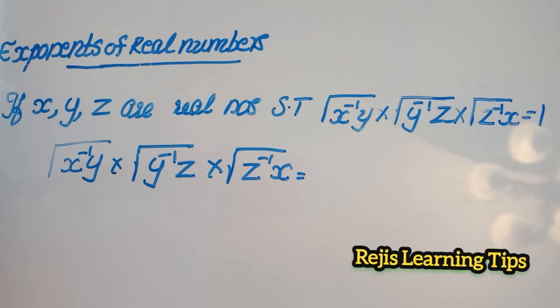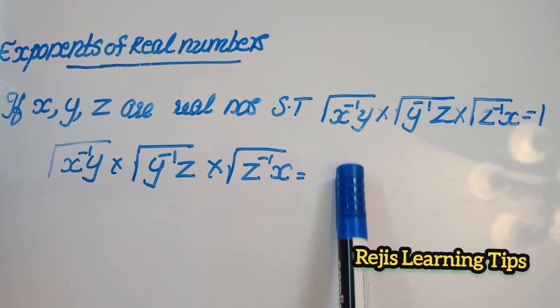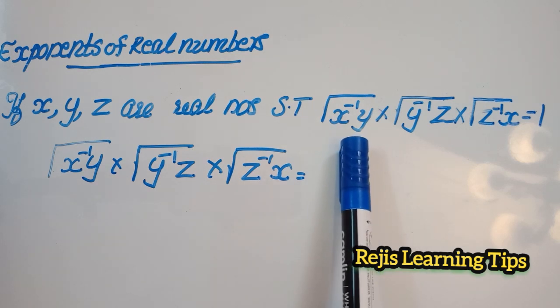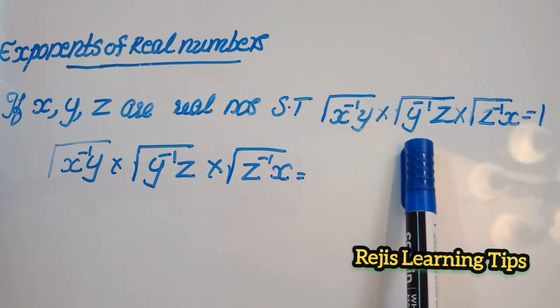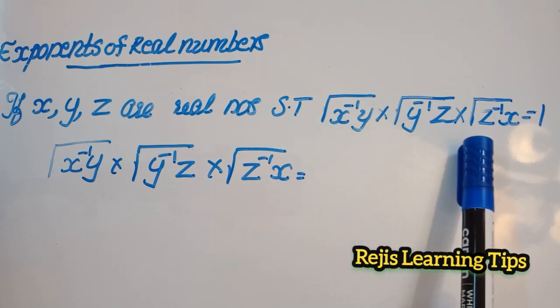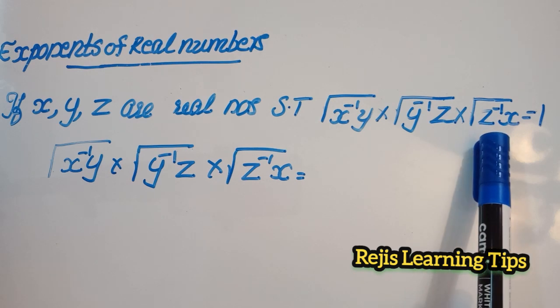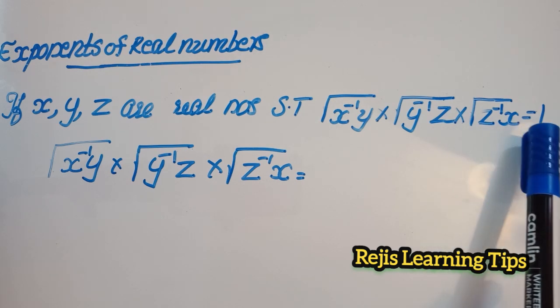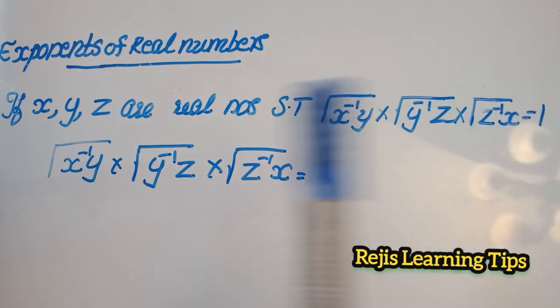If x, y, z are real numbers, show that root of x raise to minus 1 y into root of y raise to minus 1 z into root of z raise to minus 1 x is equal to 1.